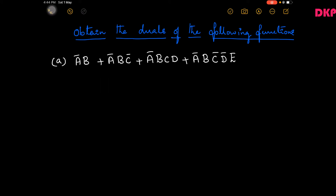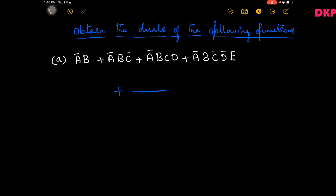First of all, let us see how to obtain the duals of a logic expression. To obtain the dual of an expression we have to change ORs to ANDs — the plus symbol is OR and the dot symbol is AND — and ANDs should be changed to ORs. All ANDs should be changed to ORs, and ones to zeros and zeros to ones.